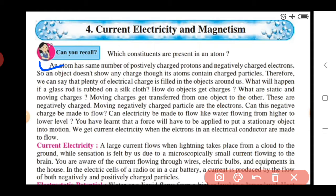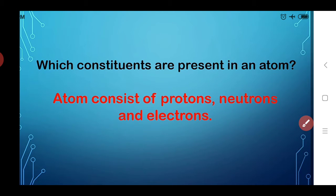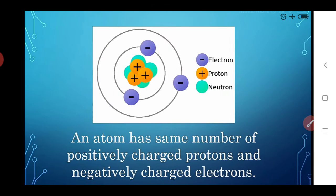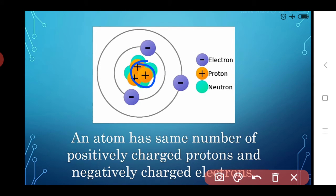Some questions are: What will happen if a glass rod is rubbed on a silk cloth? How do objects get charges? What are static and moving charges? Moving charges get transferred from one object to another — these are negatively charged particles. Looking at the image of an atom's structure: at the center are positively charged protons and chargeless neutrons, with negatively charged electrons revolving around.